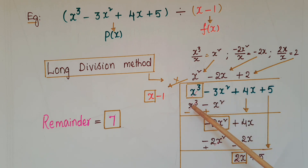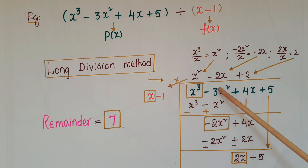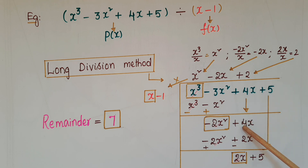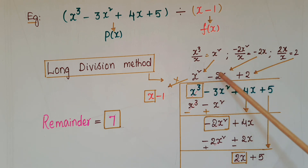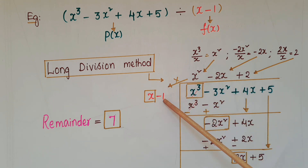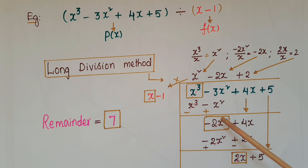Then subtract these two terms. x³ - x³ will get cancelled and -3x² + x² is -2x². The next term is 4x, so write +4x. Now the first term is -2x², so -2x² divided by x equals -2x. Write -2x at the quotient place. Then -2x × x = -2x² and -2x × (-1) = +2x. Subtract again: -2x² + 2x² cancels and 4x - 2x = 2x.